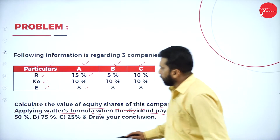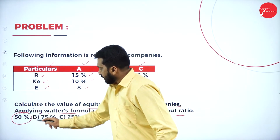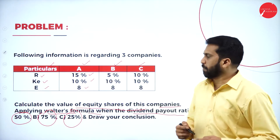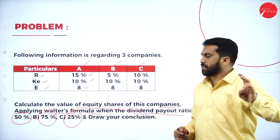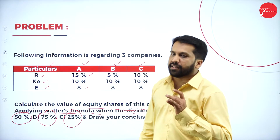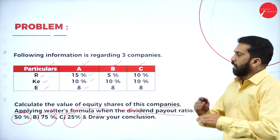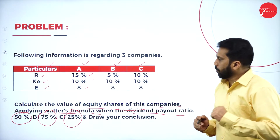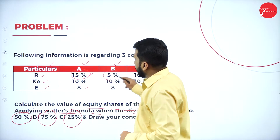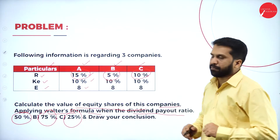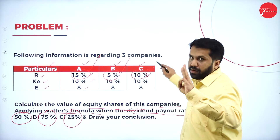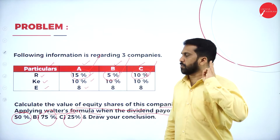Calculate the value of equity share of these companies applying Walter's formula, when the dividend payout ratio is 50%, 75%, and 25%. We have to do this for return of 15%, return of 5%, and return of 10% — that is problem number 1, problem number 2, and problem number 3. Three times you are supposed to do.